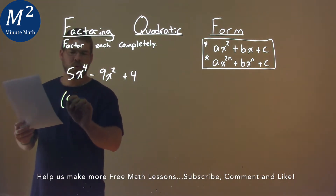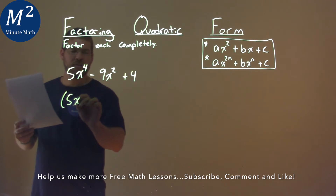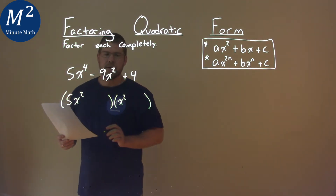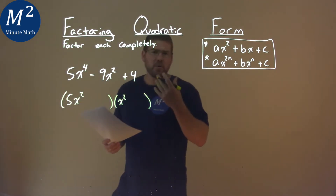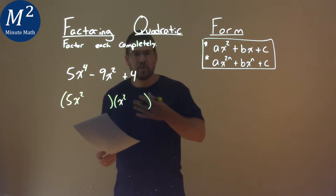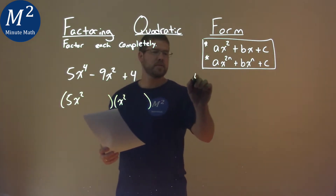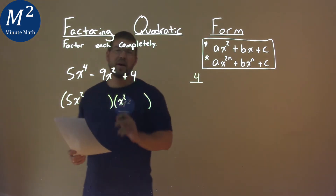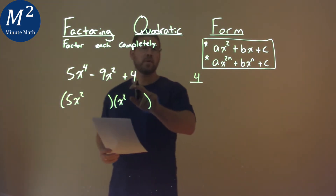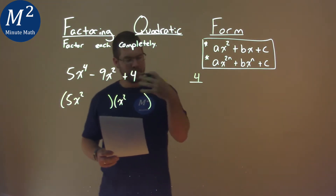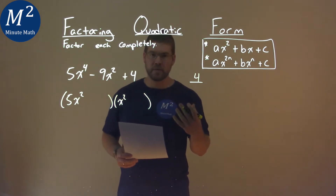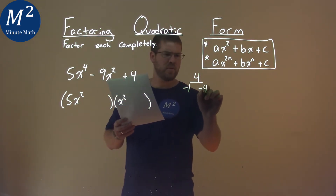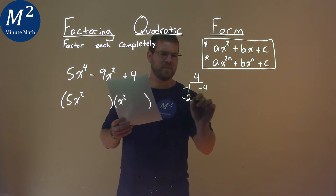What we know is this is going to have some form of 5x squared times some x squared. What we're going to use is what we normally use for quadratics. We take our c value, which is 4, and we know that since our b value is negative, both numbers that multiply to give 4 have to be negative. So that would be negative 1 and negative 4, or negative 2 and negative 2.